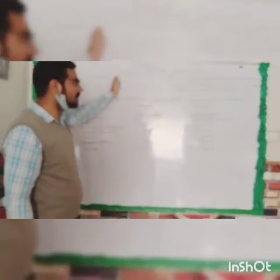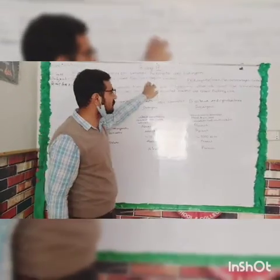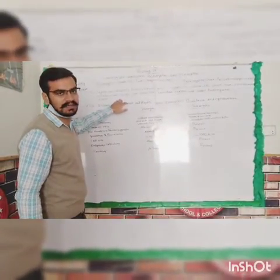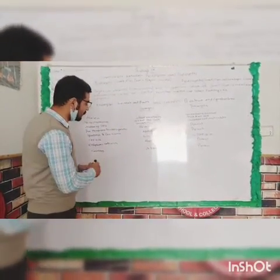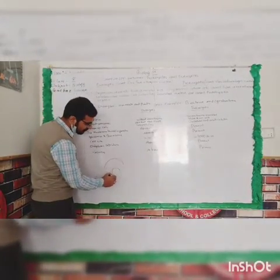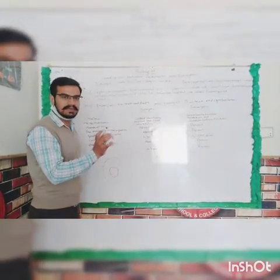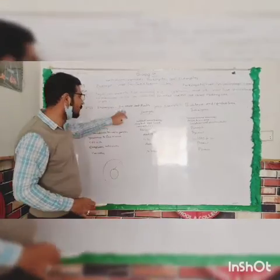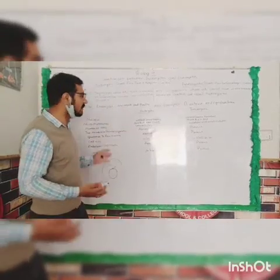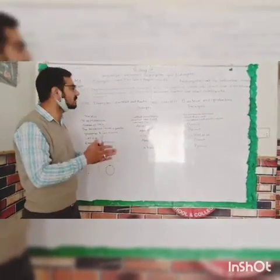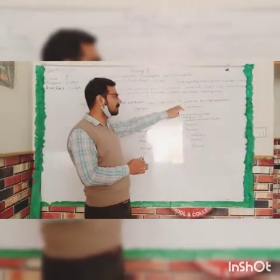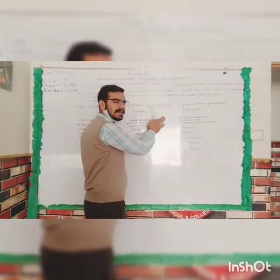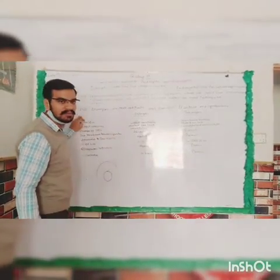Eukaryotic cells have a membrane-bound nucleus. The eukaryotic cell has boundaries — meaning the nucleus is enclosed within a membrane. This applies to cells classified as eukaryotic, including the cells of animals and plants, which are all eukaryotic.